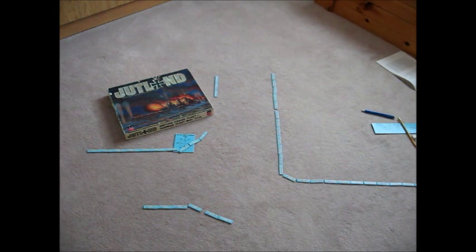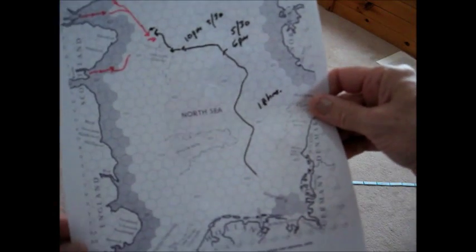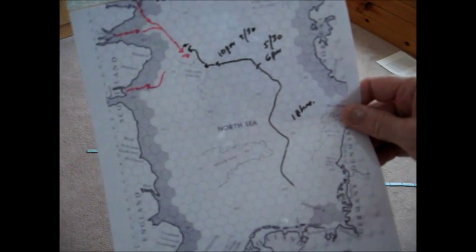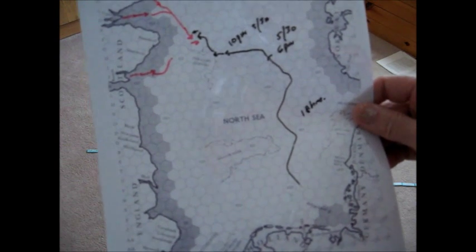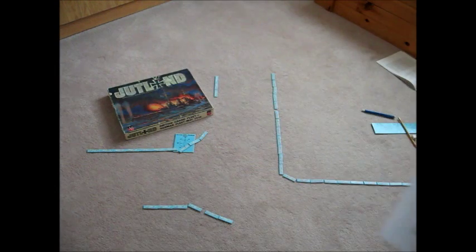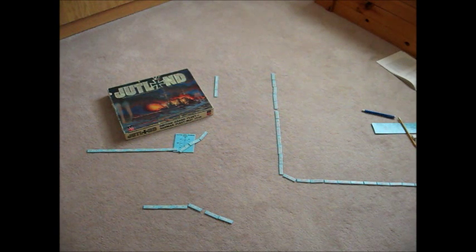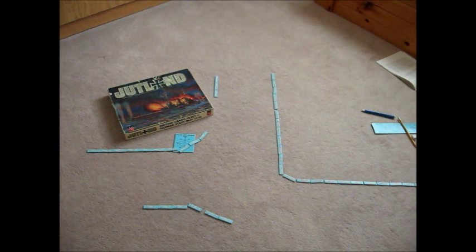I'll just close with one last thing about the search procedure. The search procedure that I showed was a simplified search procedure. Because if you're using all the optional rules, the search procedure can be, you can use U-boats and Zeppelins. There's weather. The search procedure is a lot more complicated than I showed it. But I wanted to keep it simple for the video. That's our look at the 1967 game of Jutland by Avalon Hill. Still an old favorite of mine.